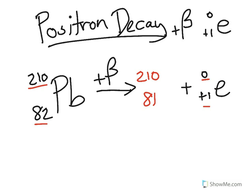And therefore, this ends up becoming an 81. And if you look at your periodic table, it's the element TL. And that's it for positron decay. We'll take a look at the next lecture.